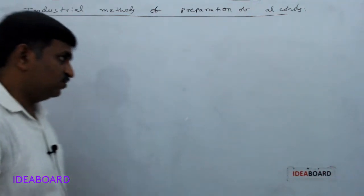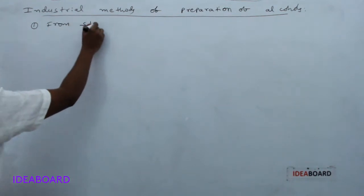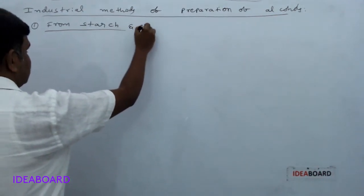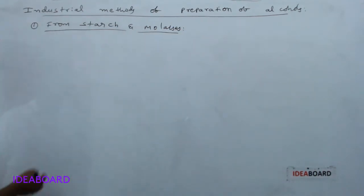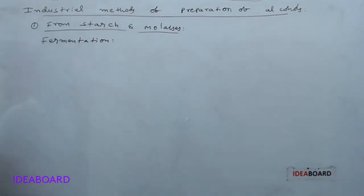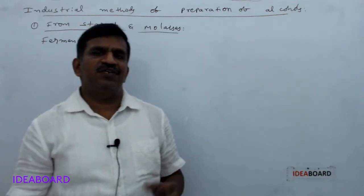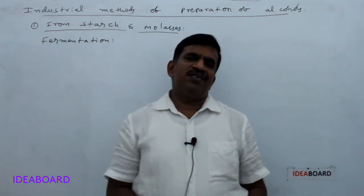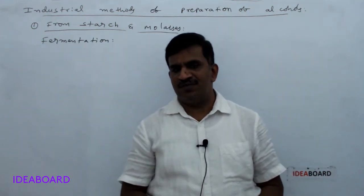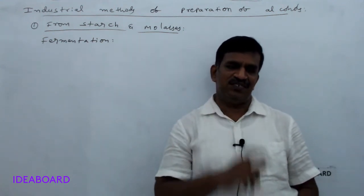Today we will discuss the industrial methods of preparation of alcohols. The first method is from starch and molasses. The method used for industrial preparation is called the fermentation process. Fermentation means converting big complex organic molecules into small molecules with the help of biocatalysts, which are enzymes.